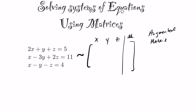You copy the coefficients down. The coefficients of the first equation are 2, 1, 1, 5. So we write 2, 1, 1, 5. The second equation gives us 1, -3, 2, 11. And the last equation is 1, -1, -1, 4.